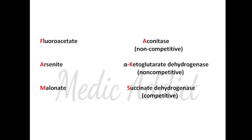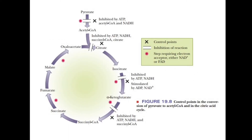The first two — FA — are non-competitive inhibition, whereas malonate is a competitive inhibition. In the diagram, the steps marked with a cross sign are the control points, or rate-limiting steps of the TCA cycle. The steps marked with a white patch covering two lines are the inhibition steps discussed. The steps marked with a white-red asterisk are those requiring NAD+ or FAD+ in the pathway.